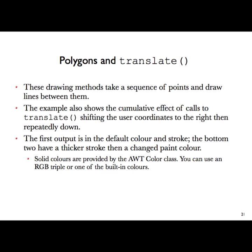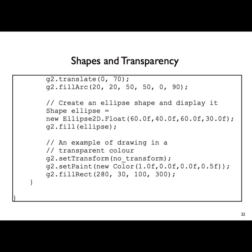It takes a sequence of points and draws lines. You've got a sequence of translates and that's what it does. We translate further down and now we've got things like filled arcs and ellipses — other shapes. The details of these don't matter too much. You've got an ellipse with a size and shape, similar to a rectangle, and it's filled in.